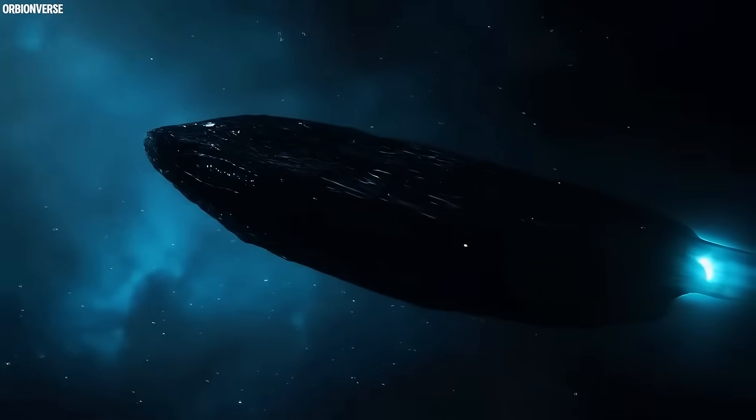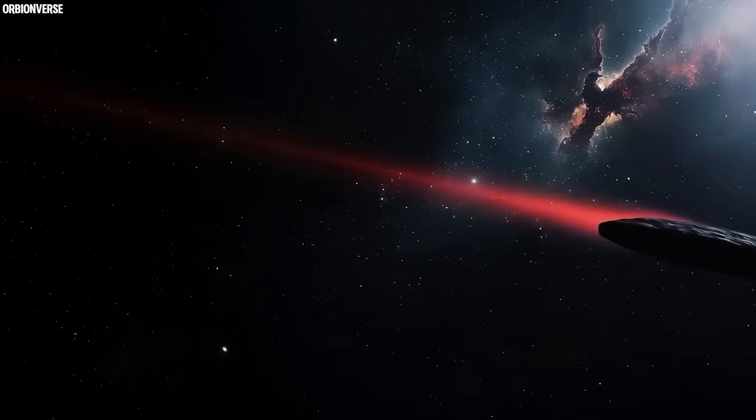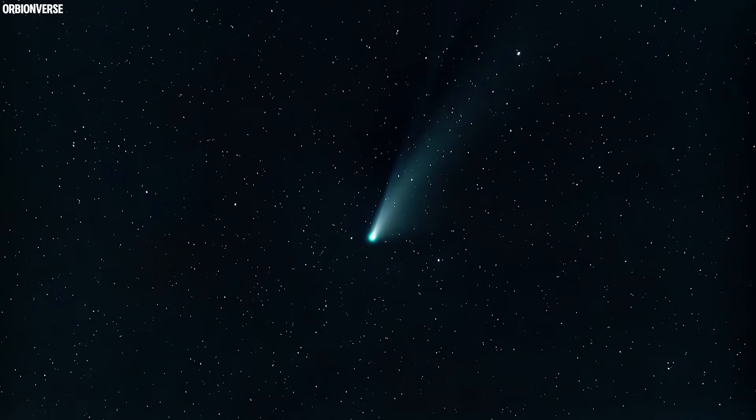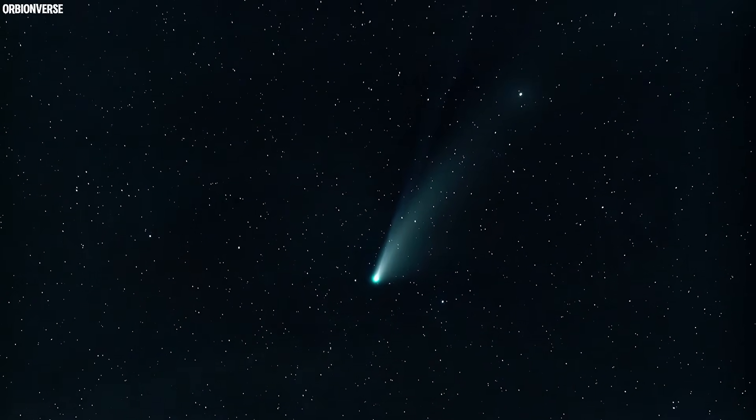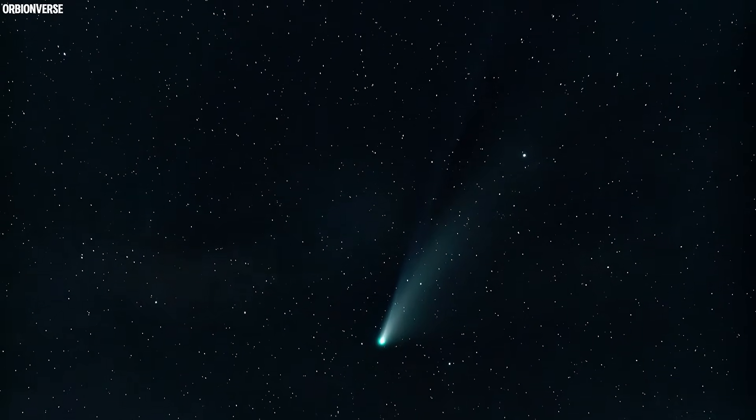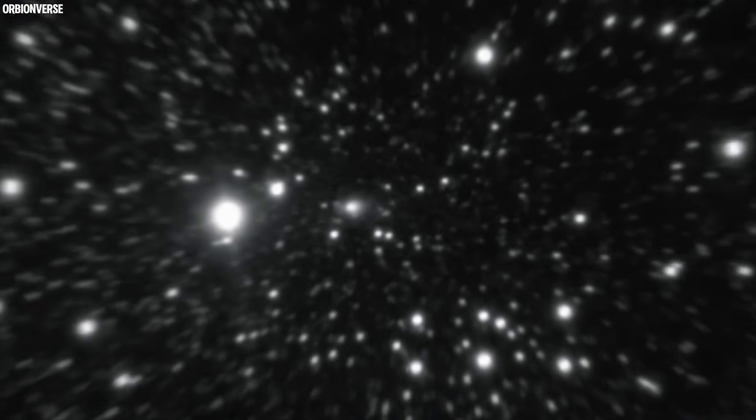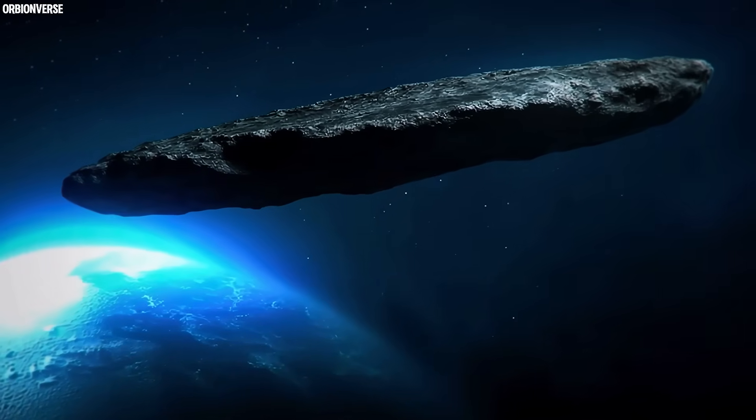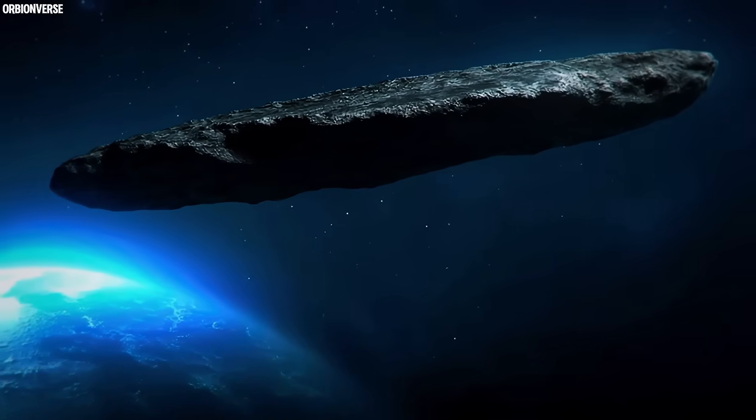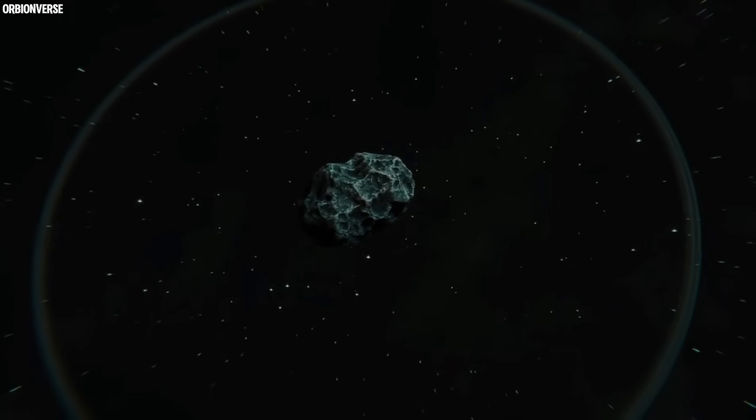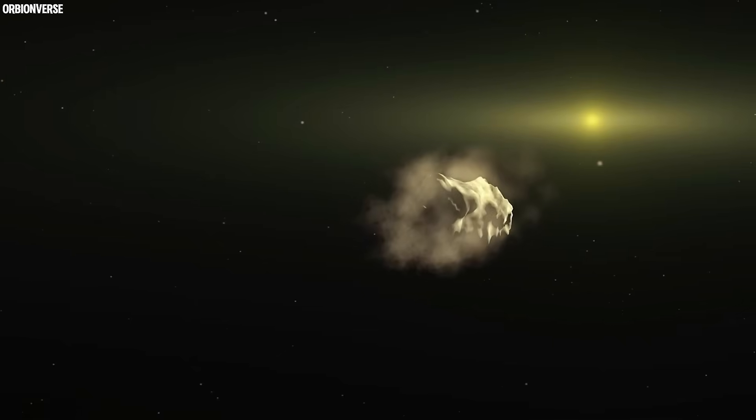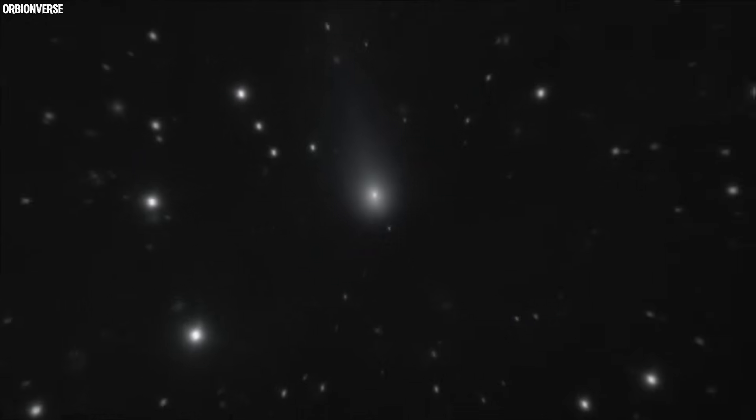By now, conspiracy theories flooded the internet. Alien probe, interstellar beacon, dormant seed. But even the skeptics fell silent when the Hubble Space Telescope captured the next frame. For the first time, at the comet's very center, a single dark structure became visible. An object roughly a kilometer wide, hexagonal in shape, casting its own faint magnetic field. No one knew what to call it. NASA labeled it simply Core Object A. And still, the pulses continued. 22 seconds. Always 22.